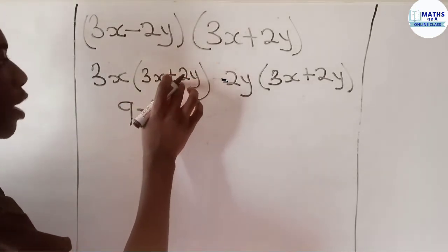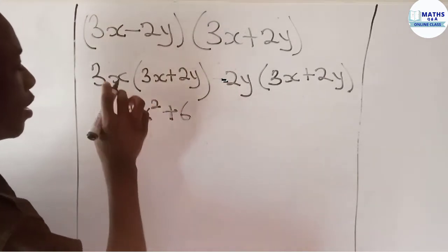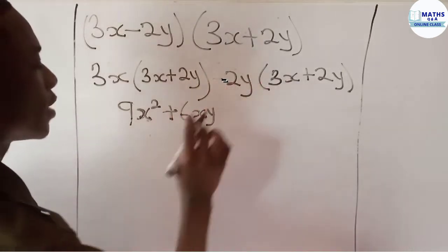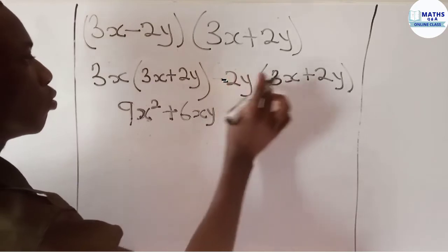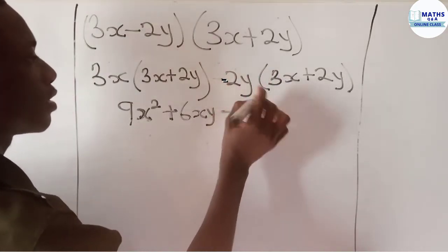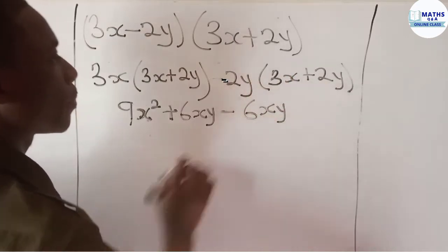Now you come to this side, negative 2 multiply 3 gives negative 6, y multiply x gives xy, and then we have negative 2 multiply positive 2, which gives negative 4.